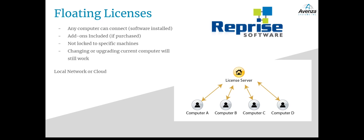We use a license managing software called Reprise License Management, also known as RLM. Local network floating license servers require you to install the RLM software onto your own machine. The machine will then effectively become the server, therefore the machine you decide to install the server on should be accessible and on the same network as the machines you plan to install Map Publisher or Geographic Imager on. If there is a computer not on the network, you can set up a VPN to connect to the same network as the server, which is beneficial for organizations with remote employees.